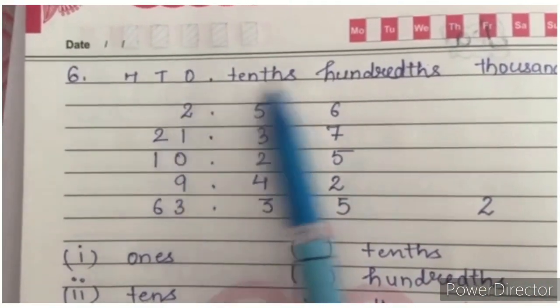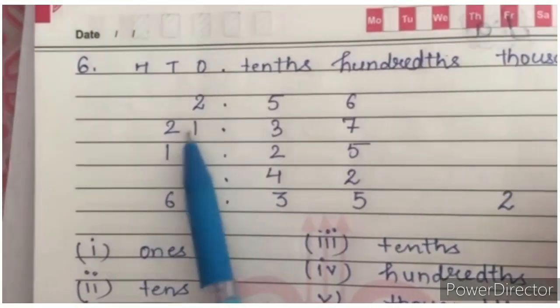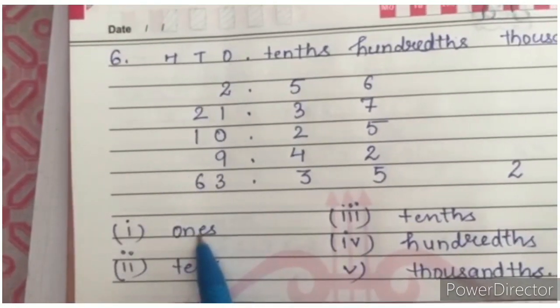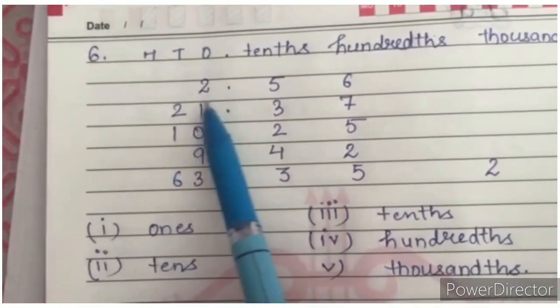First, in this part, you will arrange the numbers like this and you will write the place value. In first, what is the place value of 2? It is on ones. So we will write ones. See on second, it is tens under which place value. So we will write tens.